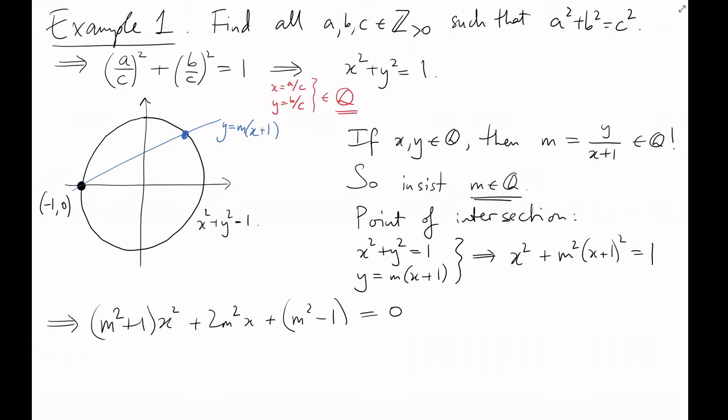But, in fact, it's better than that. We know one of the points of intersection happens at x equals minus 1, so we should expect this quadratic expression to have a factor of x plus 1 in it. And, in fact, it factorizes as (x+1) times ((m squared plus 1)x + m squared minus 1) equals 0. So, x is minus (m squared plus 1)/(m squared plus 1).